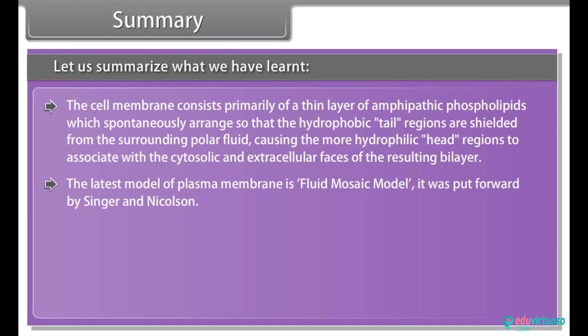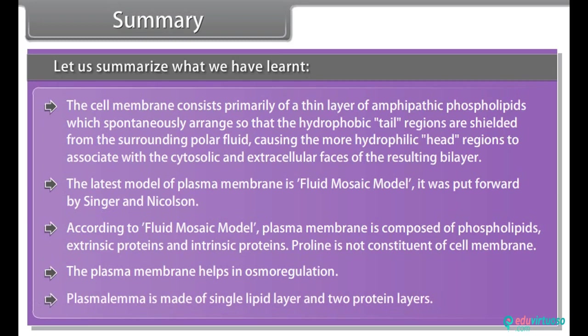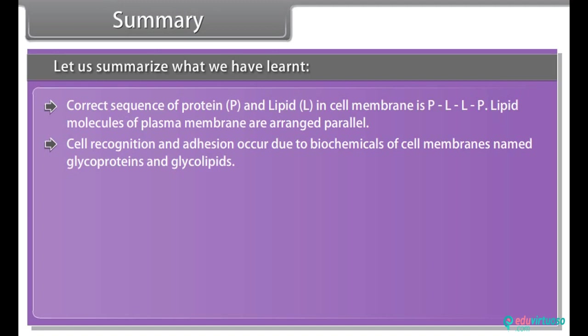It was put forward by Singer and Nicholson. According to the fluid mosaic model, plasma membrane is composed of phospholipids, extrinsic proteins and intrinsic proteins. The plasma membrane helps in osmoregulation. The correct sequence of protein P and lipid L in cell membrane is PLLP. Cell recognition and adhesion occur due to biochemicals of cell membranes named glycoproteins and glycolipids. Two animal cells are interconnected by desmosome. Cell eating is phagocytosis.